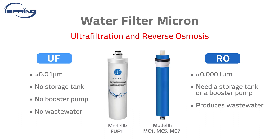A reverse osmosis membrane can filter the water down to near 0.0001 or 1 ten-thousandth of a micron. Since the pore size of the RO membrane is tiny, higher pressure is needed to push the water through the membrane. Therefore, a boost pump or a water storage tank may be necessary if the water pressure is low.